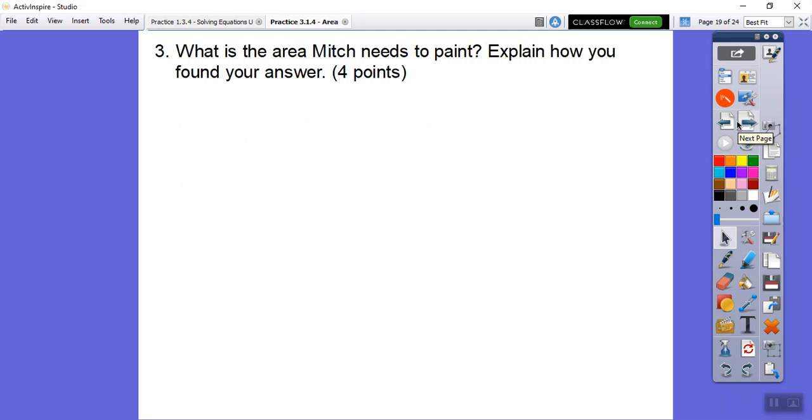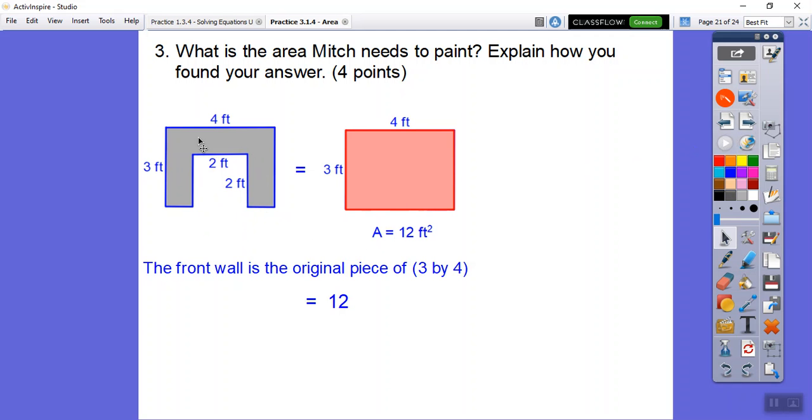Now they're going to ask what's the area that Mitch needs to paint, and explain how we found the answer. Here's the piece that he's going to paint. The front wall is going to be the big rectangle that we started with, and we're going to take out that little piece right there. So the big rectangle is 12 and then the small square was 4, so we take away 4. 12 minus 4 is 8. Don't forget to answer this in the context of the problem. Area is always square feet or square units, whatever the units are. These are feet.